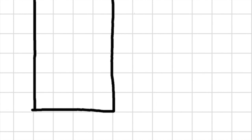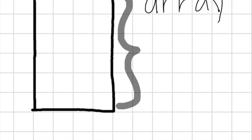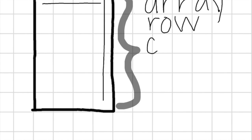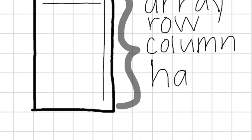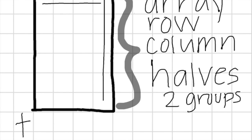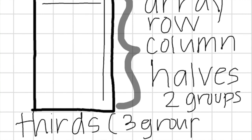So here's your final review. This entire shape is called an array. This right here is a row, and this right here is a column. When we are looking at halves, that's two equal groups. Thirds is three equal groups. And fourths is four equal groups. Great job, mathematicians — now you can do this work independently.